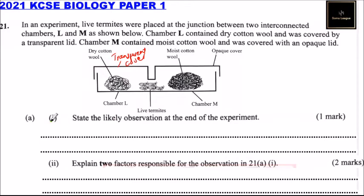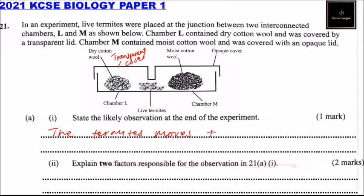Part A, Roman numeral 1: state the likely observation at the end of the experiment. At the end of the experiment, the termites move to chamber M.